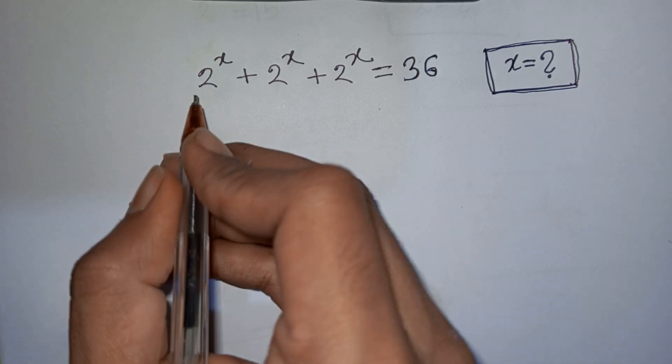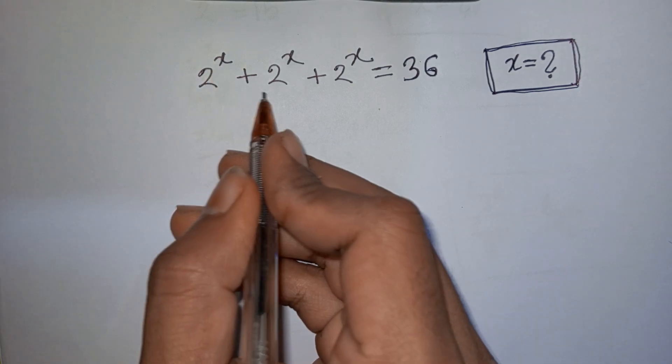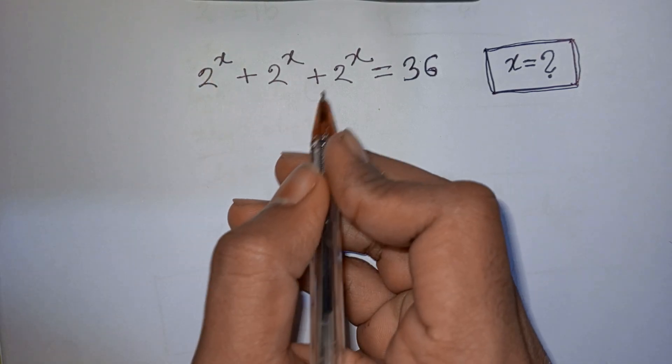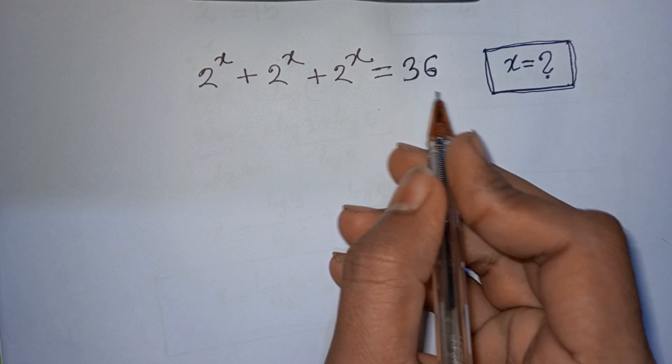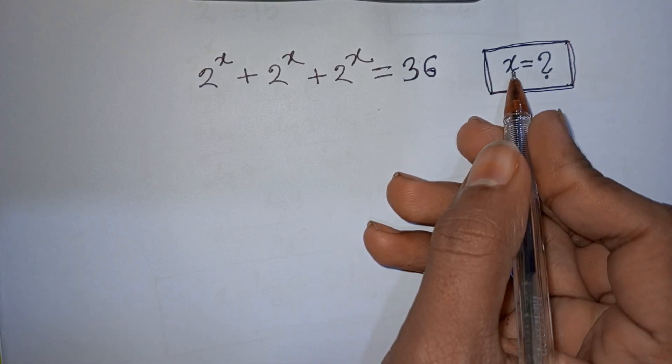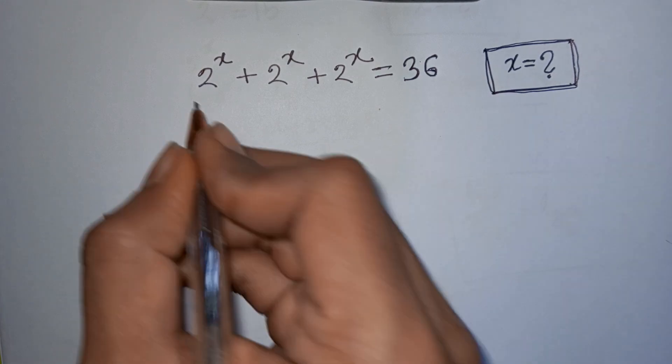How to solve 2 power x plus 2 power x plus 2 power x is equal to 36. Find the value of x.